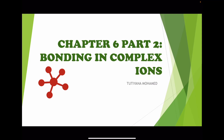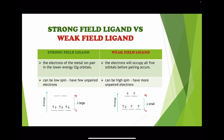Bonding in complex ions: this is the difference between strong field ligand and weak field ligand. For the strong field ligand, the electrons of the metal ion pair in the lower energy T2G orbitals. Here is the energy level diagram showing T2G as the lowest energy level for the octahedral arrangement.